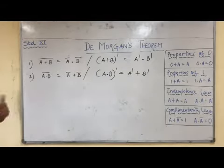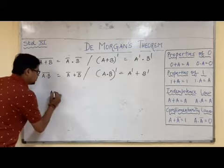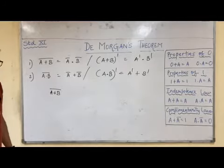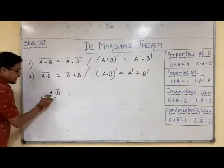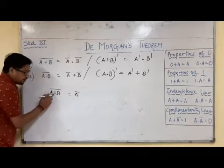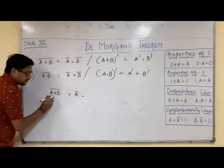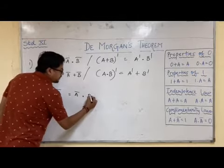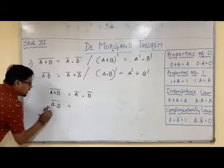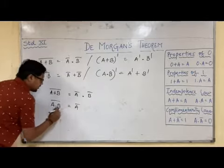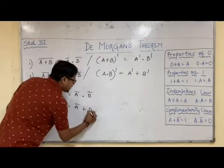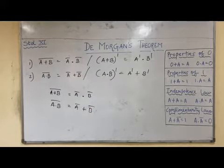Now let us have a quick look at what is actually happening. A plus B whole bar — you know the meaning of bar is 'not.' So taking the bar of everything: A of bar gives A̅, plus of bar — the reverse of plus is dot, B of bar gives B̅. In the same way, A of bar gives A̅, dot of bar — the reverse of dot is plus, B of bar gives B̅. This is how the rules come out.